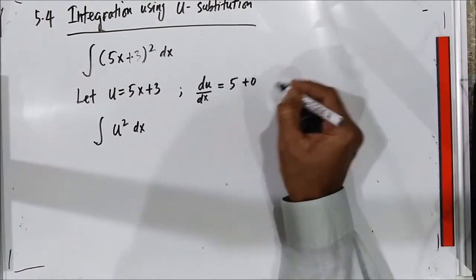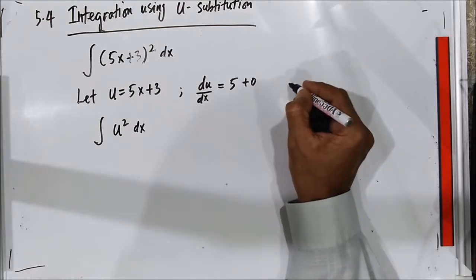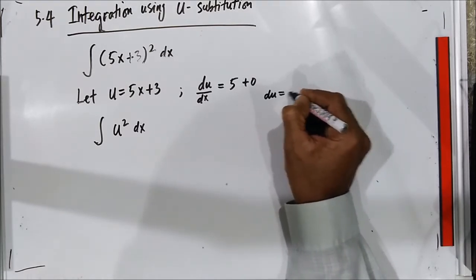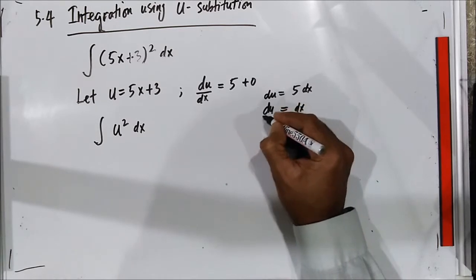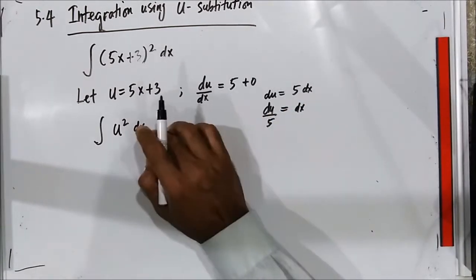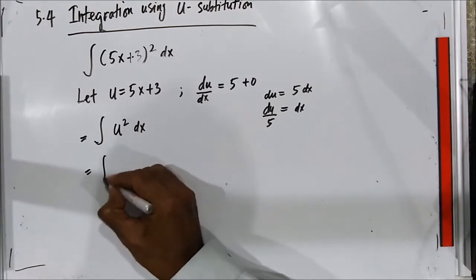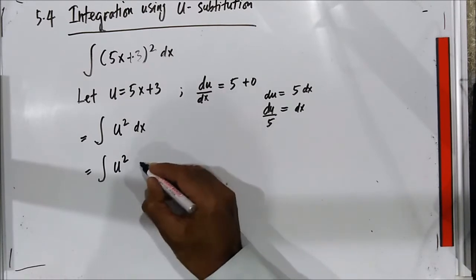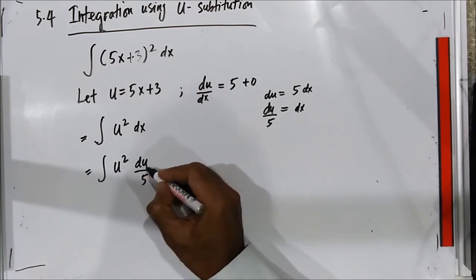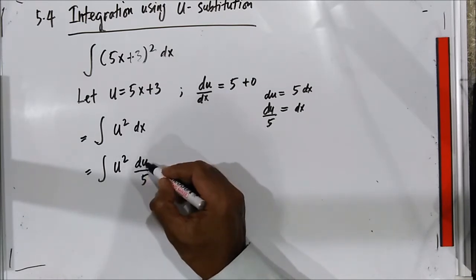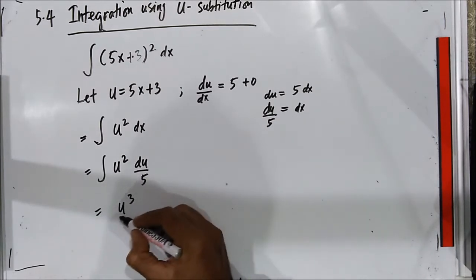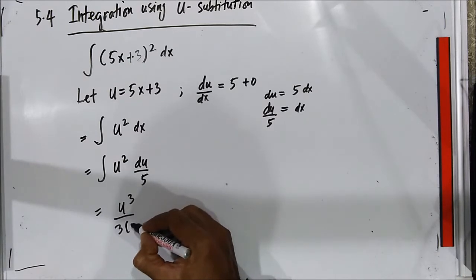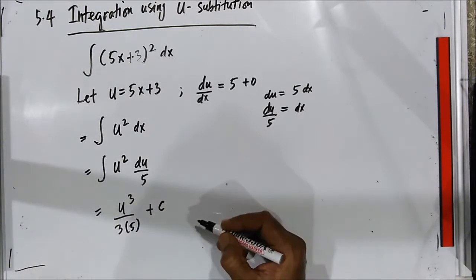So, du/dx equals 5, which means dx equals du over 5. Substituting inside, we get u² times du/5. Now we have u squared and du, so we can integrate with respect to u. We get u³ over 3, multiplied by 1/5, plus C. This is the answer.